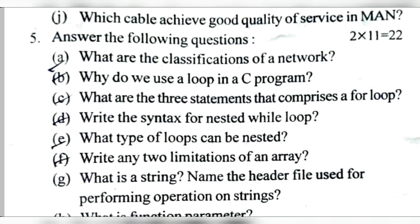Why do we use a loop in a C program? To repeat the same instruction for a specific number of times, we use a loop. The three statements that comprise a for loop are: initialization statement, test expression, and update expression. Any type of loop can be nested — we can nest a for loop, while loop, or do-while loop.